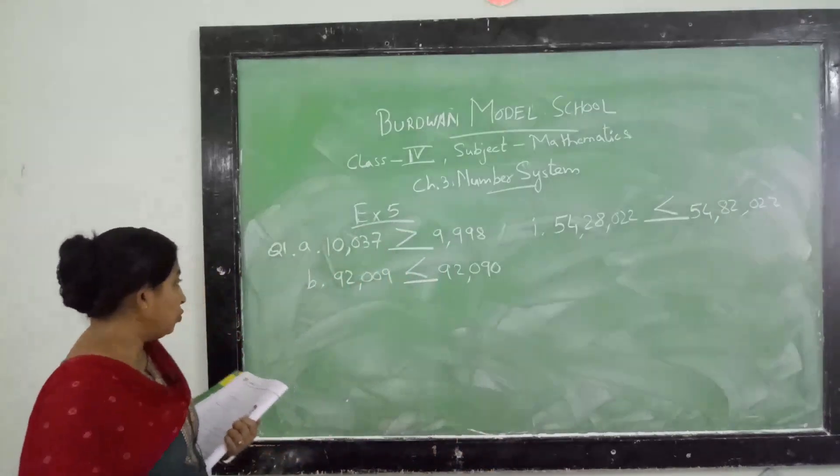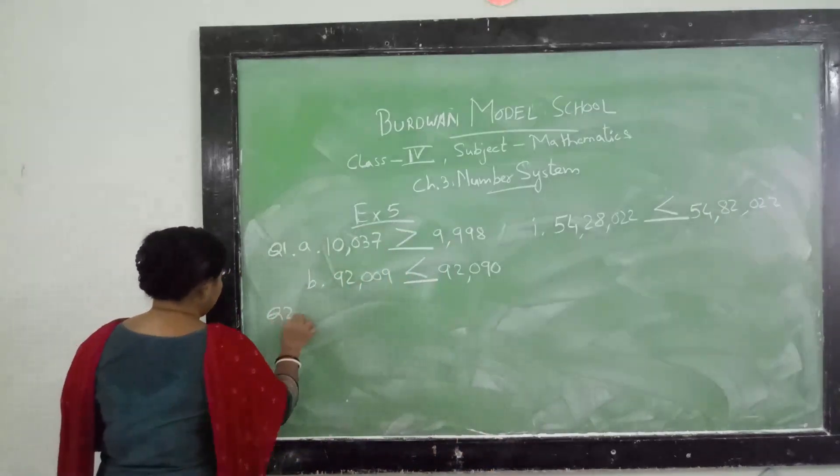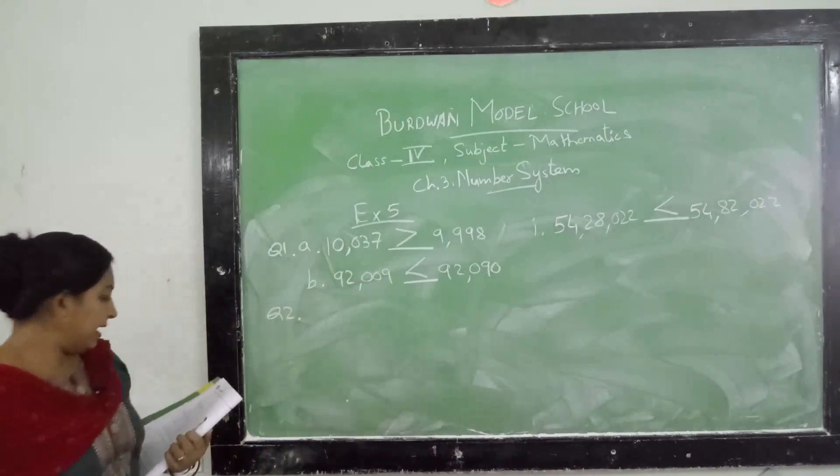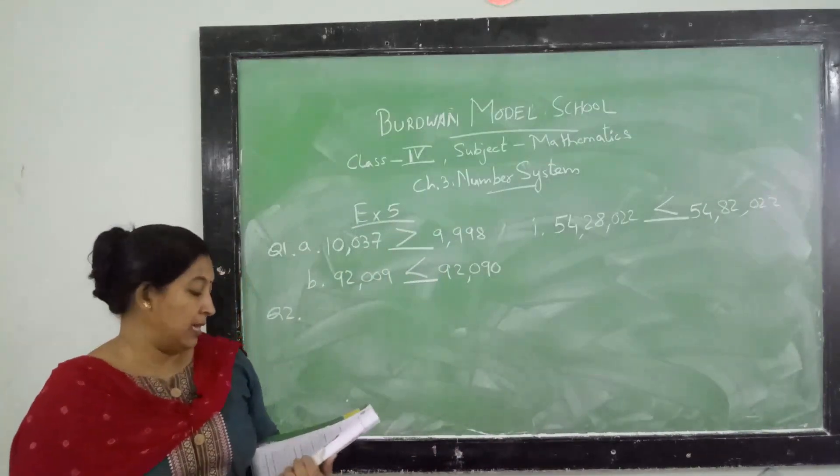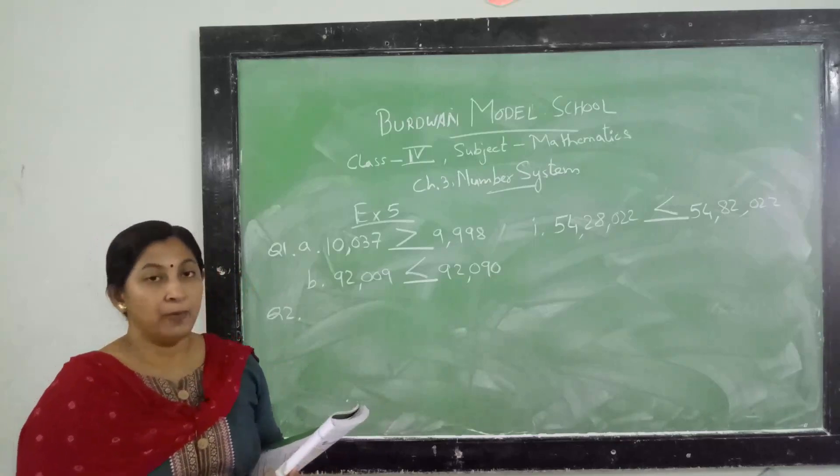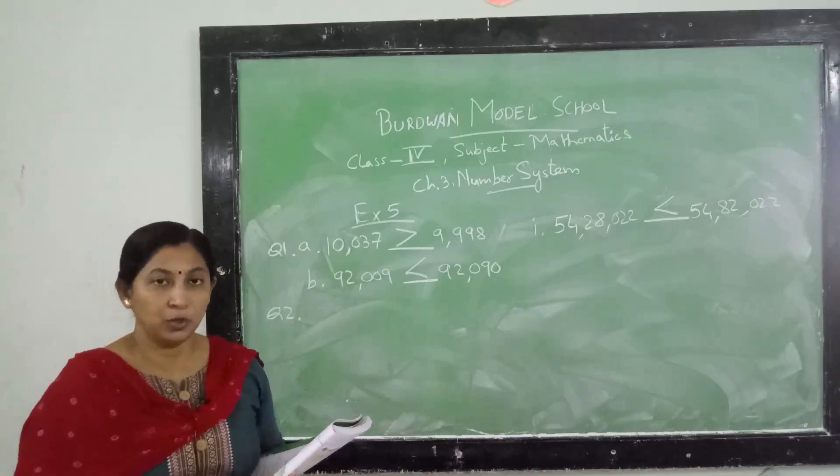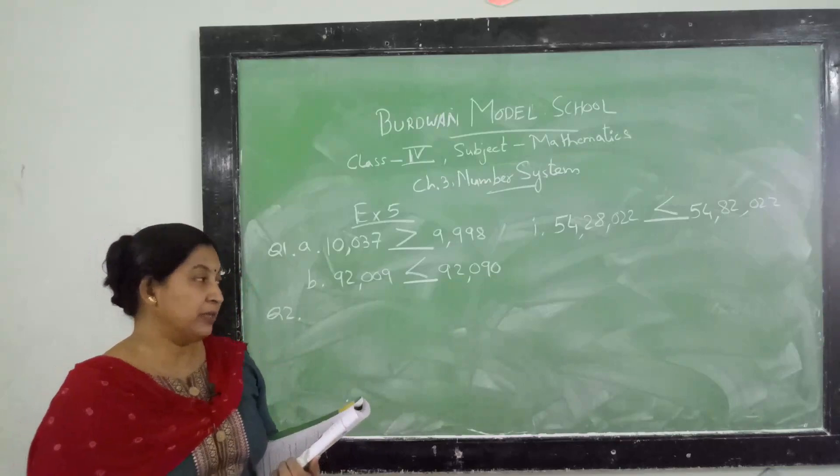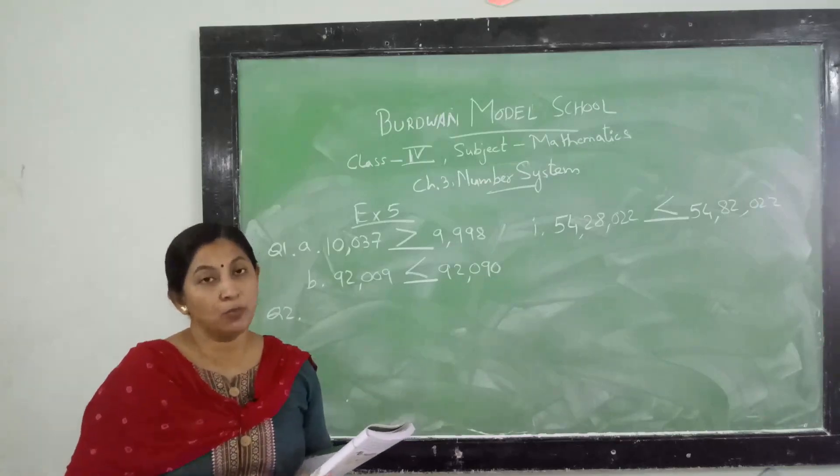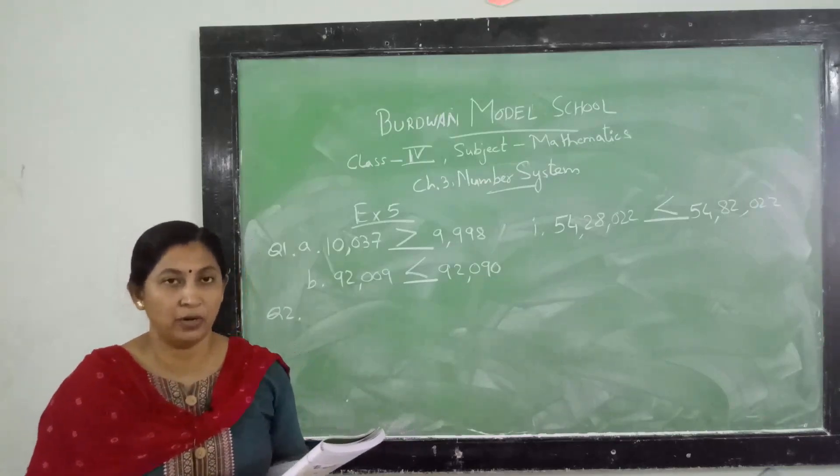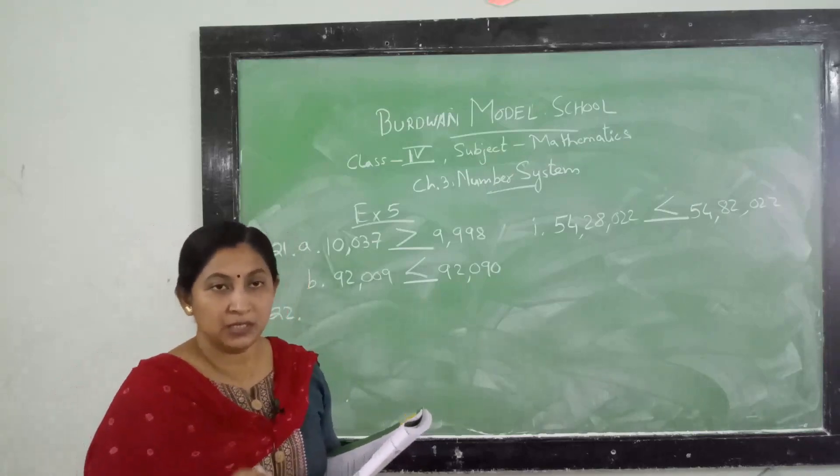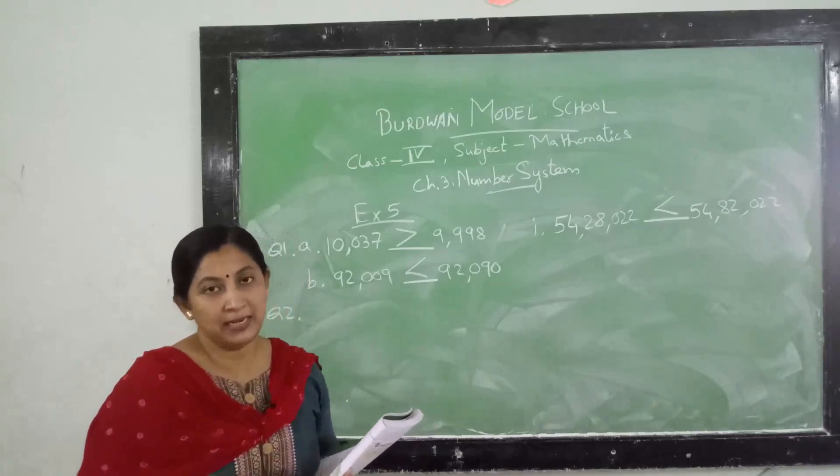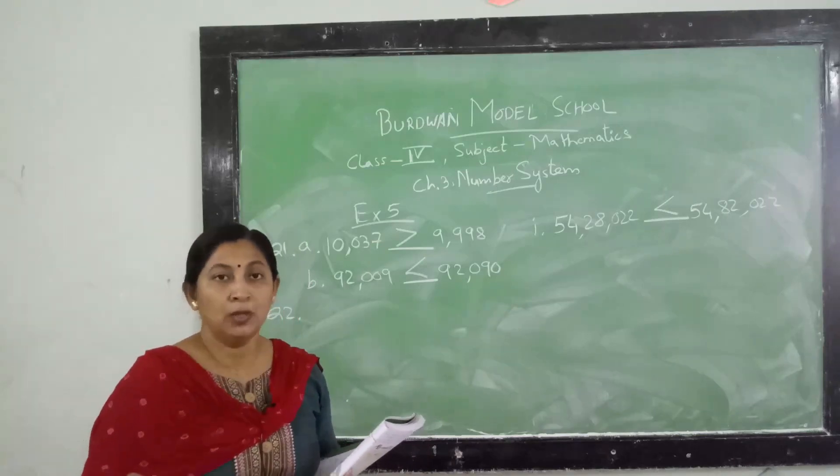Now come to question number 2. For question number 2, arrange in ascending order. You have to arrange the numbers in ascending order. Ascending order means you have to write from bigger to smaller or smaller to bigger? Yes, ascending order means the increasing order, from smaller to bigger number you have to write, clear? Ascending order means in increasing order - the smaller one, then next one, then next one. That means from smaller to bigger you will write for ascending order.